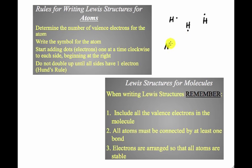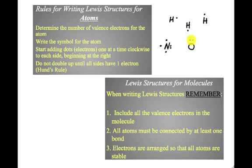When we get to nitrogen, we have to follow Hund's rule — put one electron at a time going around before pairing. Nitrogen has five valence electrons total. Oxygen has six valence electrons: one, two, three, four, five, six. And that's your atoms — pretty simple.